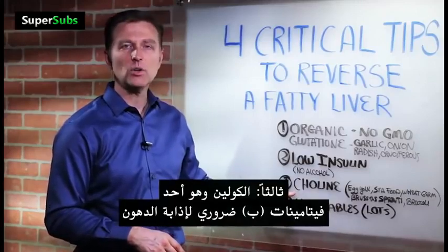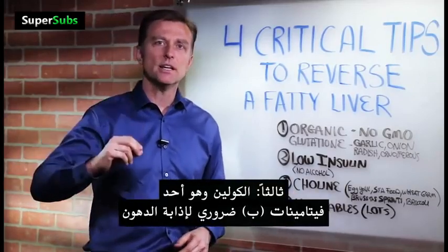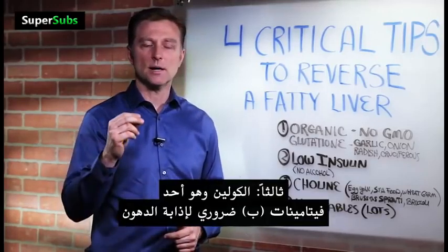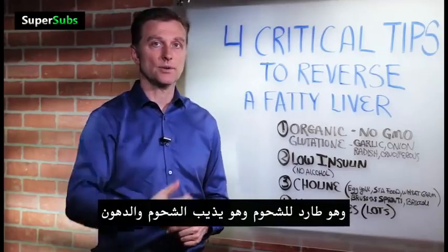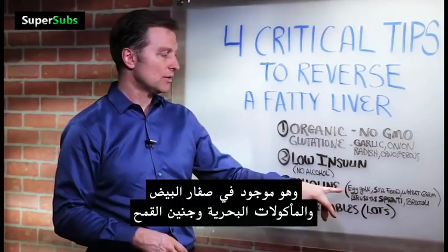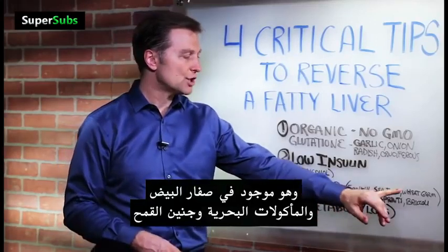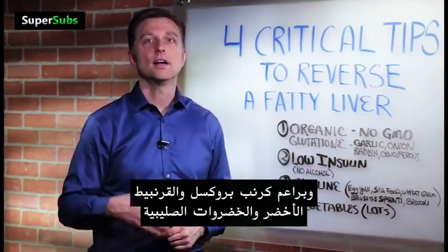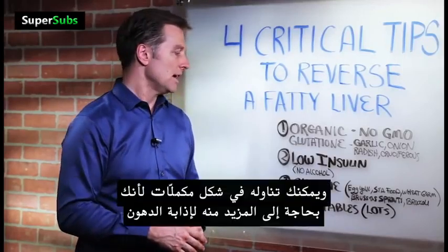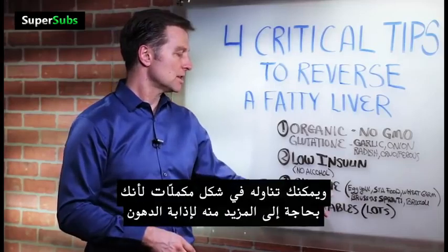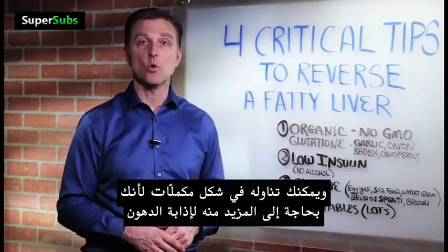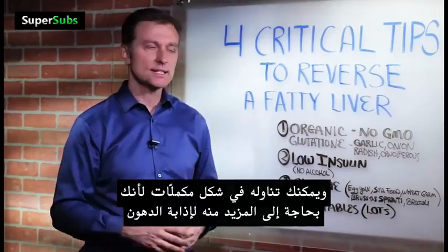Choline is number three. Choline is a B vitamin that is very essential for dissolving or breaking down fat from the liver — it's called lipotrophic, meaning it breaks down lipids or fats. It's found in egg yolks, seafood, wheat germ, Brussels sprouts, broccoli, and other cruciferous vegetables. You may even consider consuming choline as a supplement as well, because we want to get more of it right now to really break that stuff down.